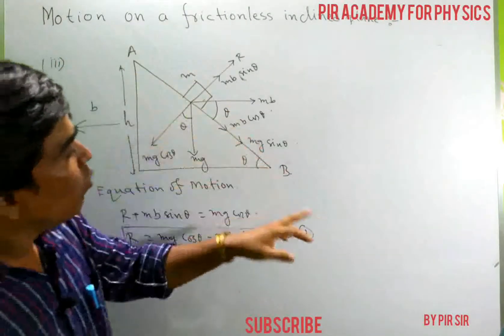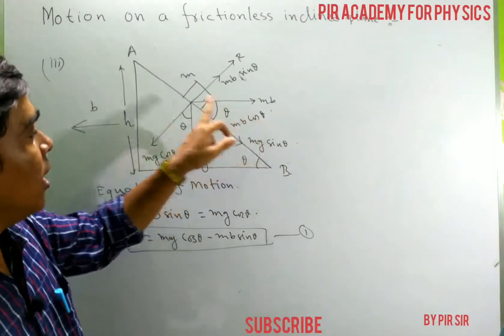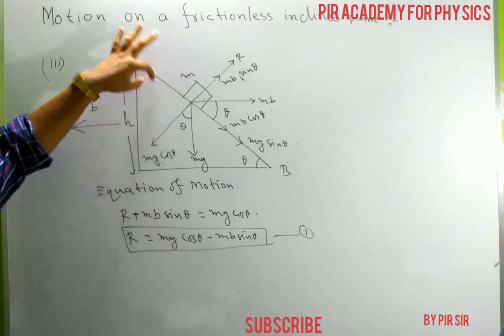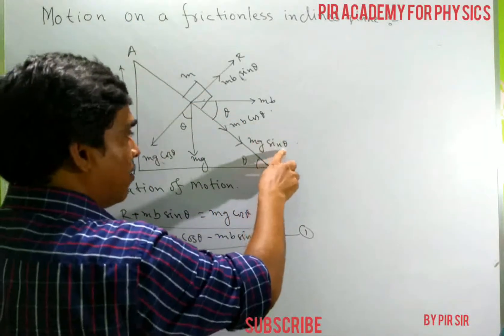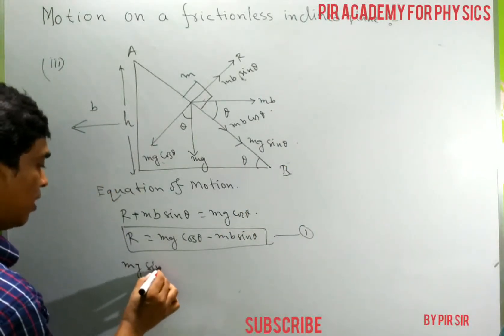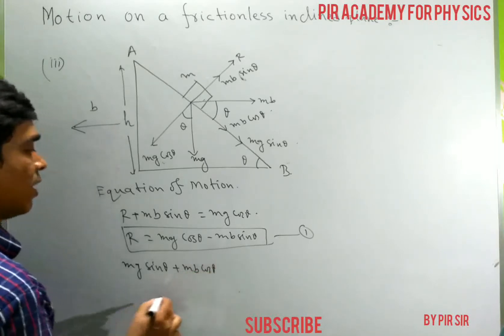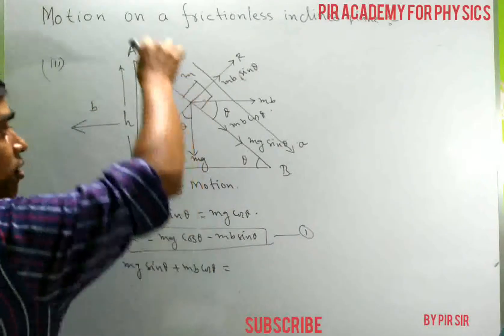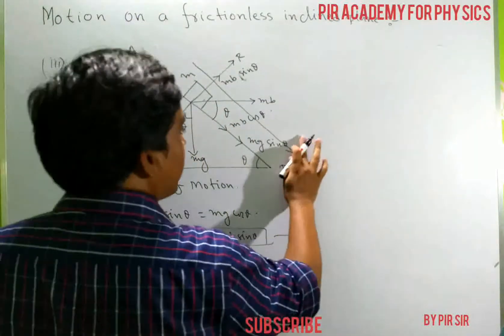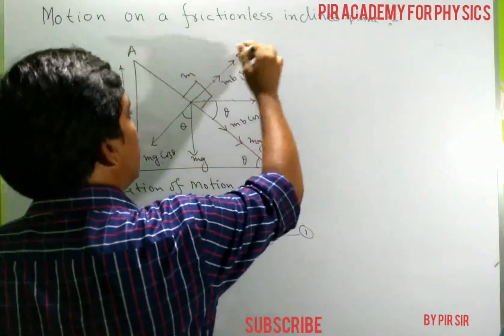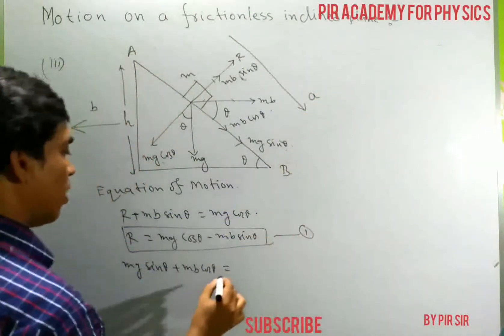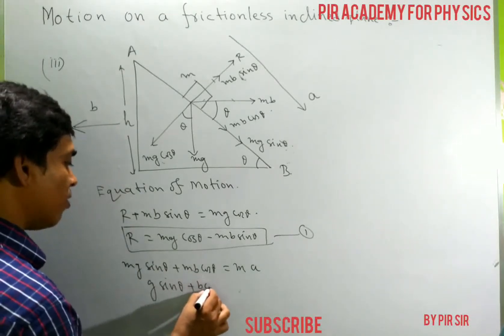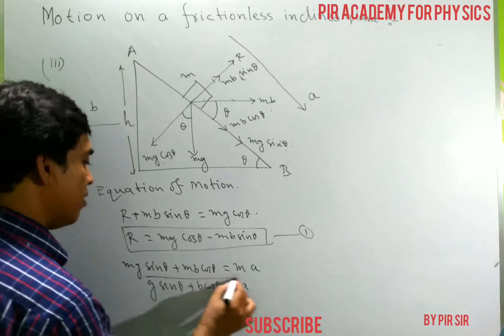Along the inclined plane, both Mg sin theta and MB cos theta act in the same downward direction. Since the plane is frictionless, the total force along the plane is Mg sin theta plus MB cos theta, which equals MA. Cancelling M, the acceleration for case three is: A equals g sin theta plus B cos theta.